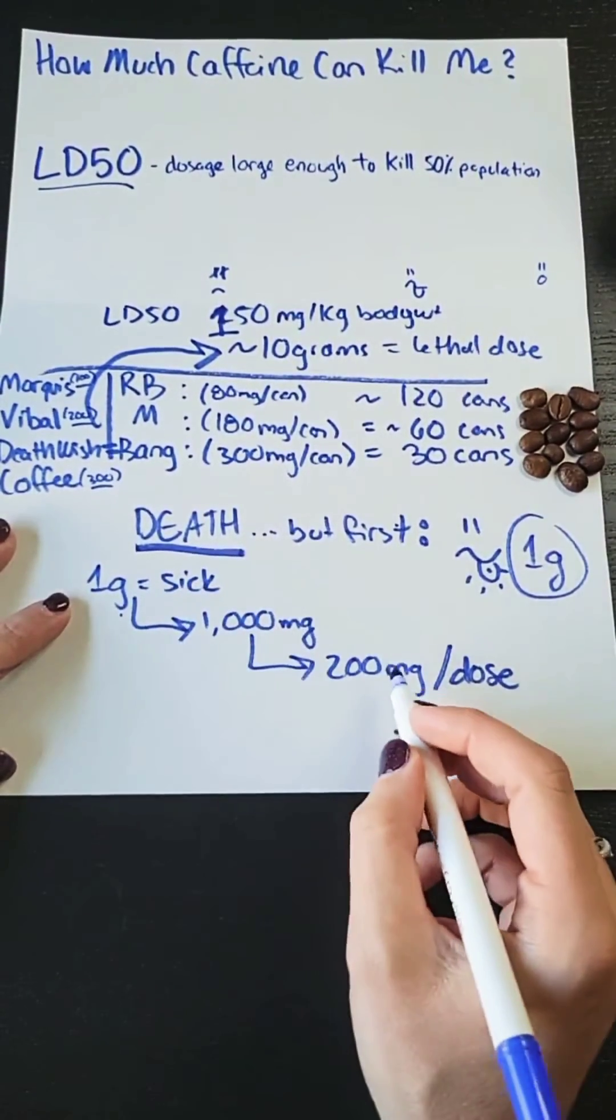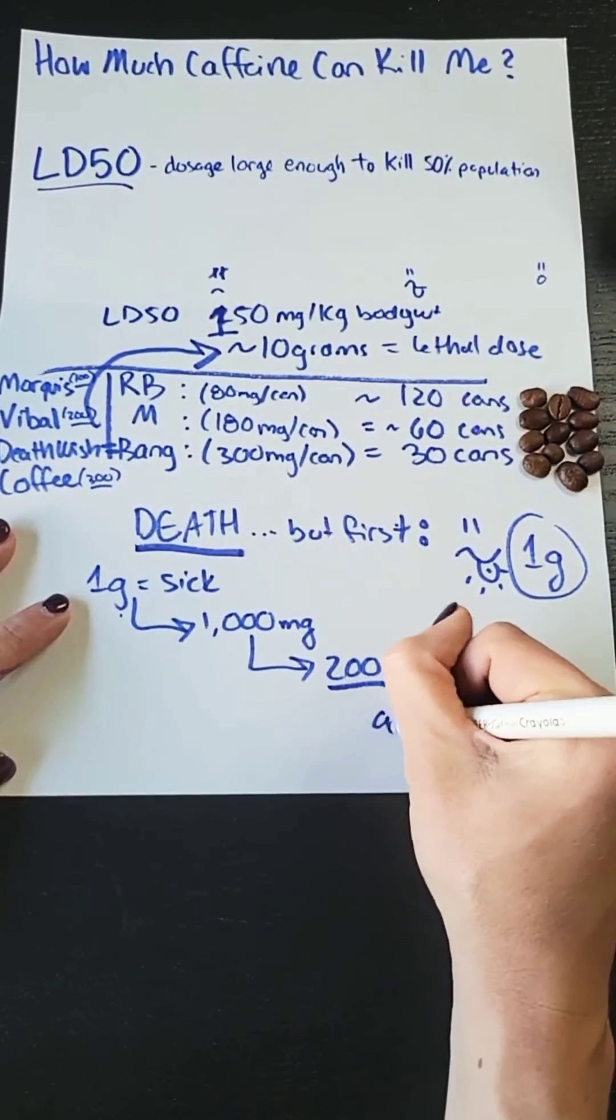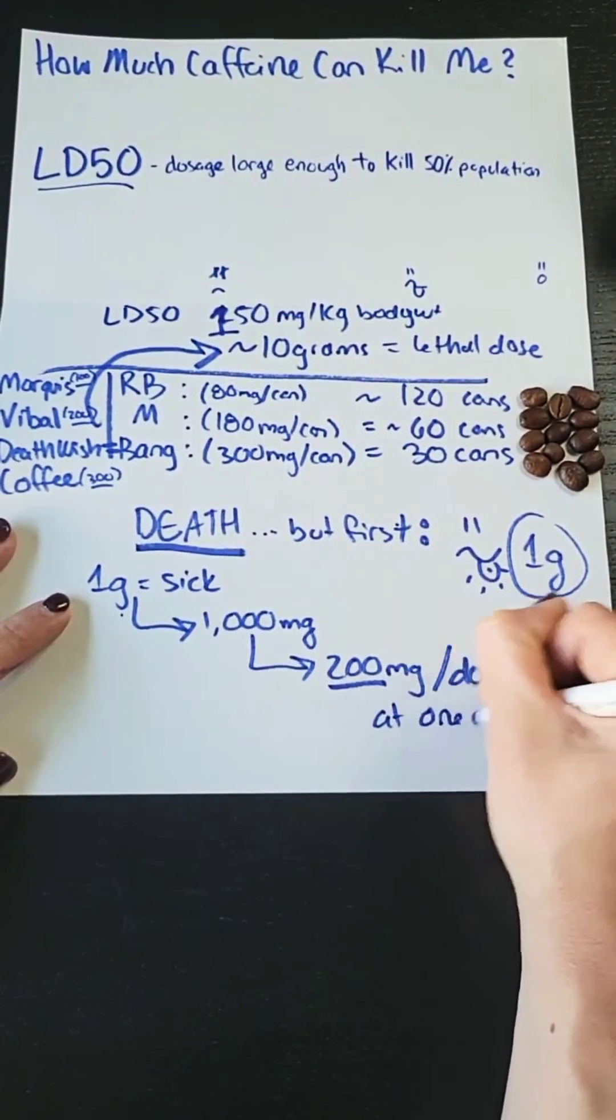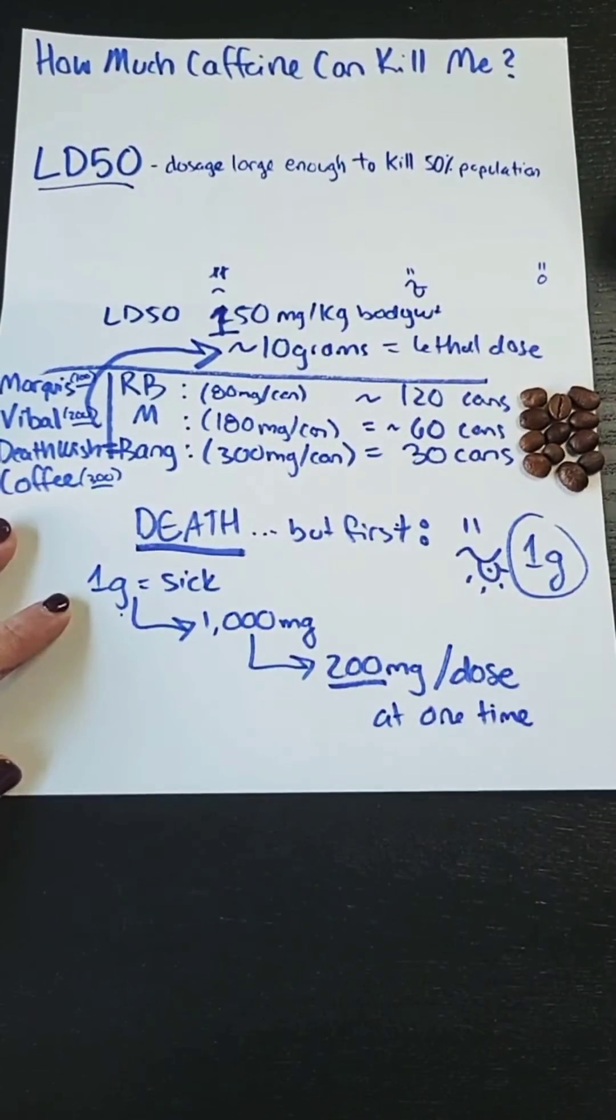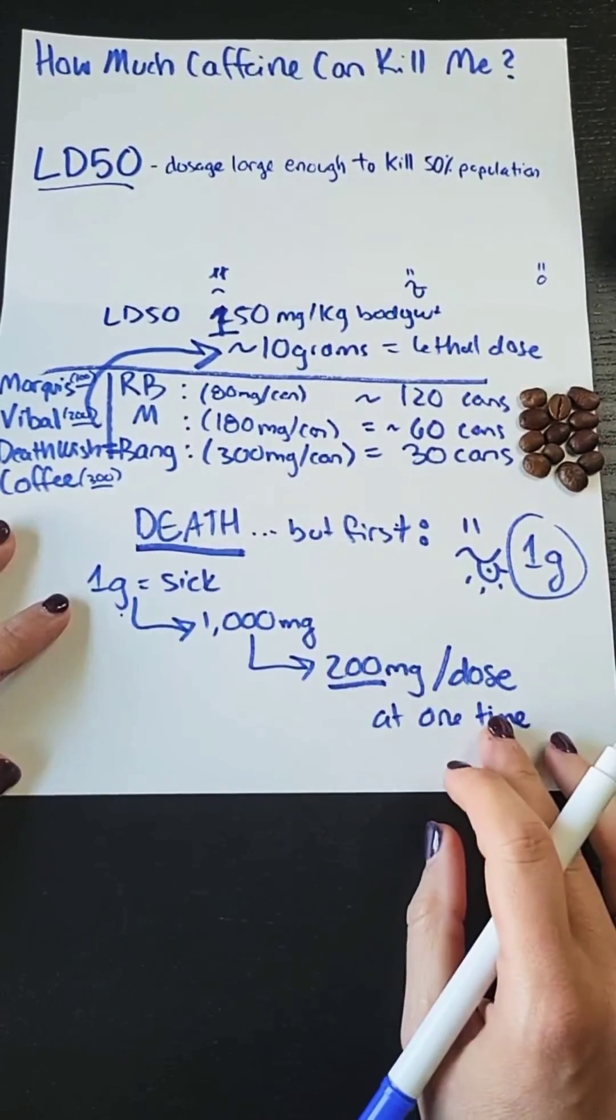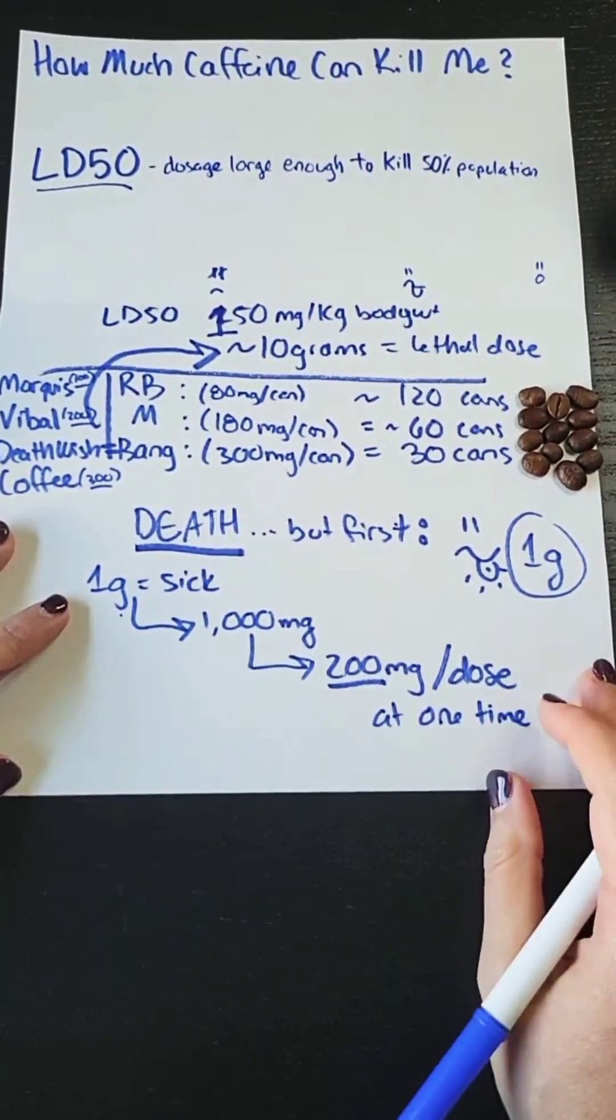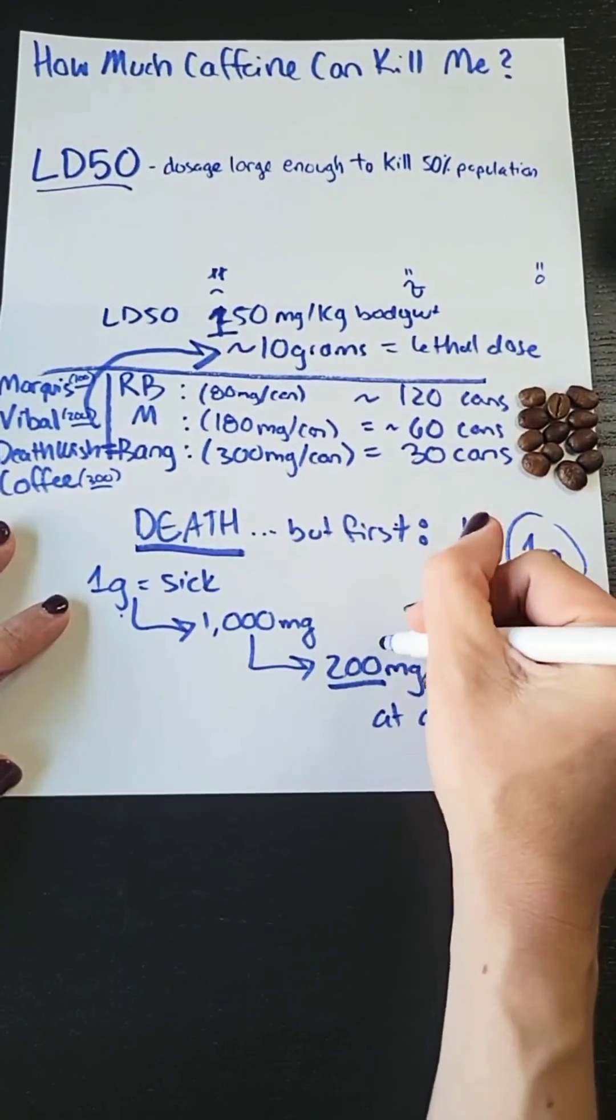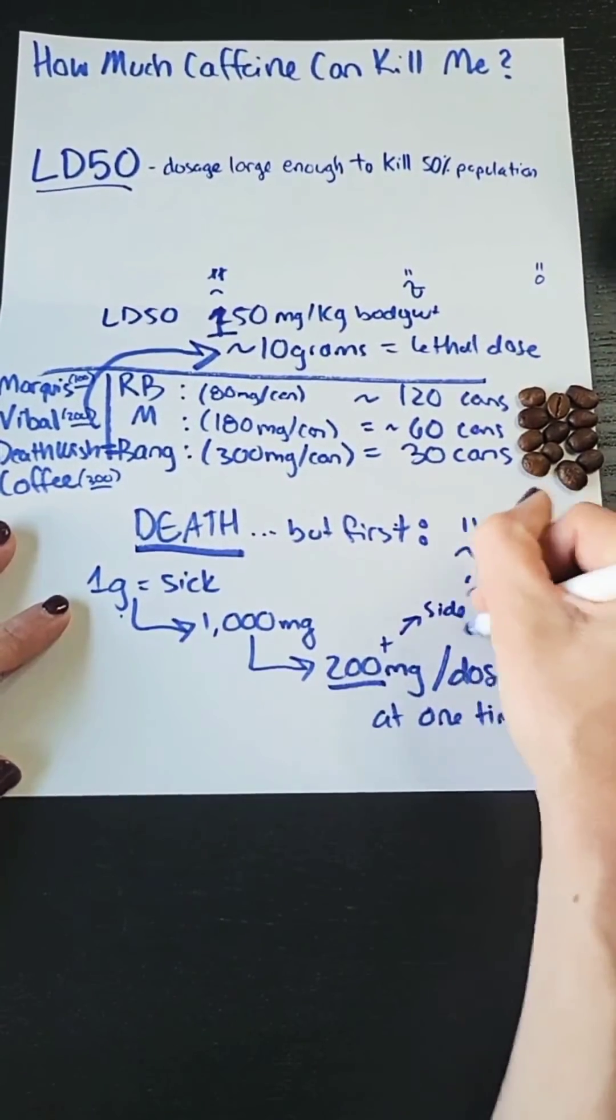This is the maximum dosage that someone can have at one time of caffeine to avoid side effects of caffeine, including jitters, nausea, insomnia, all of those common caffeine side effects, dehydration. All of those happen if you go above this dosage.